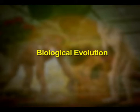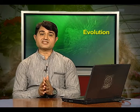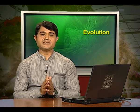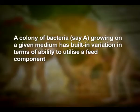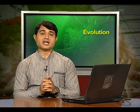Turning to biological evolution — evolution by natural selection in a true sense would have started when cellular forms of life with differences in metabolic capability originated on earth. The essence of Darwinian theory about evolution is natural selection. The rate of appearance of new forms is linked to the life cycle or life span. Microbes that divide fast have the ability to multiply and become millions of individuals within hours. A colony of bacteria growing on a medium has built-in variation in terms of ability to utilize a feed component. A change in the medium composition would bring out only that part of the population that can survive under the new conditions. In due course of time, this variant population outgrows in numbers and appears as a new species.